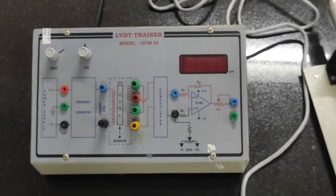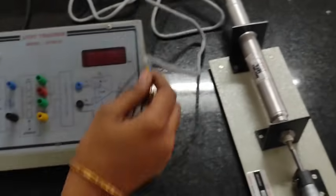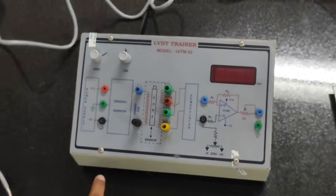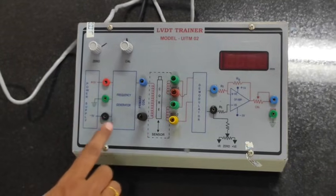This is the LVDT trainer kit and this is the screw cage and multimeter. Now we are interfacing the LVDT core displacement with the kit.